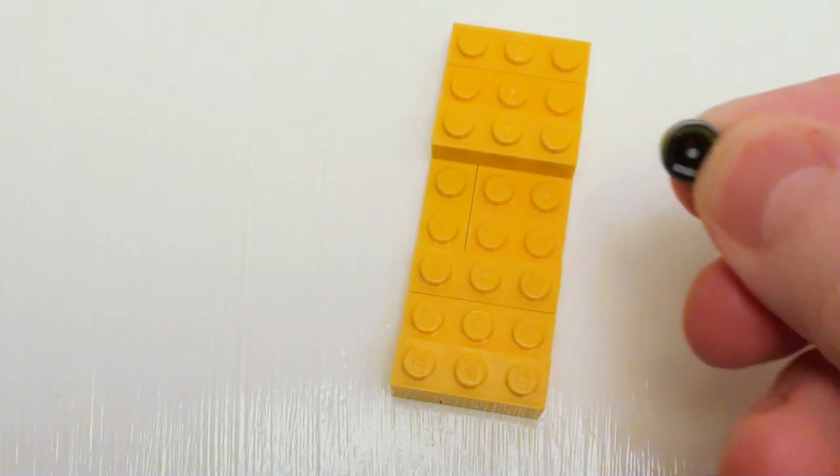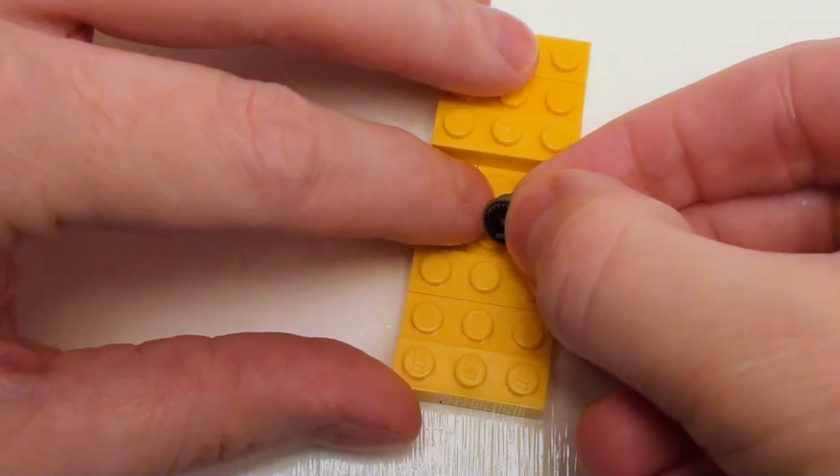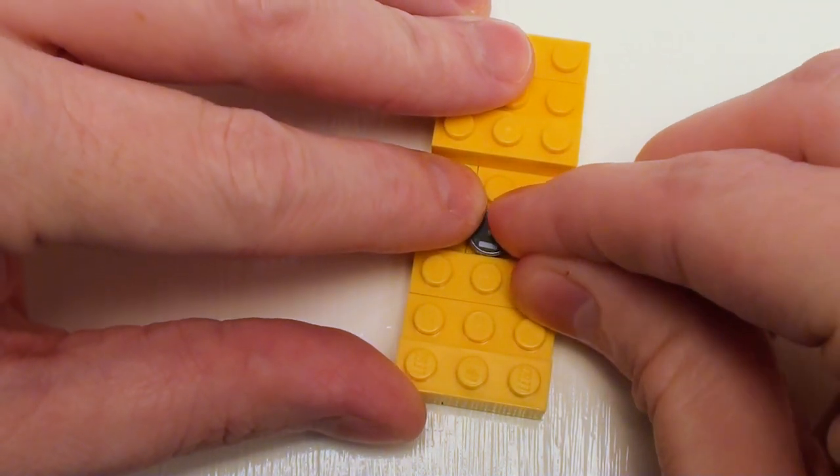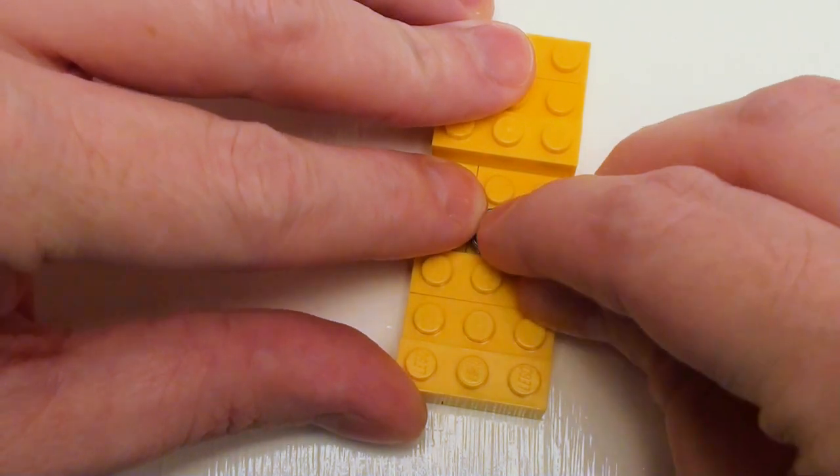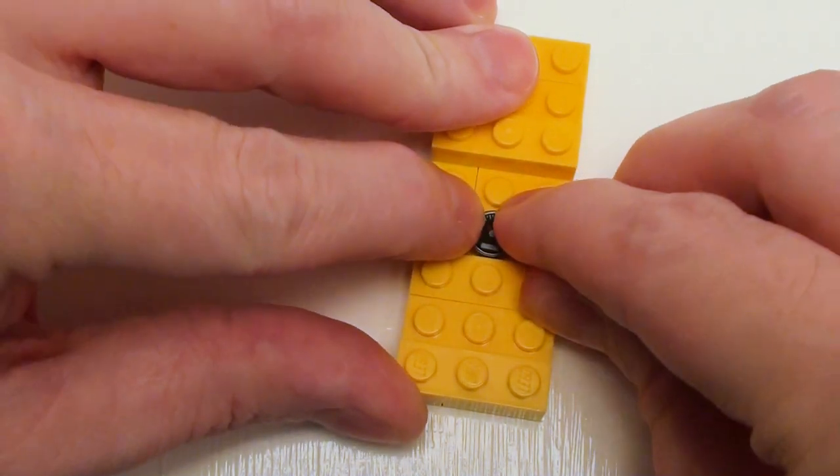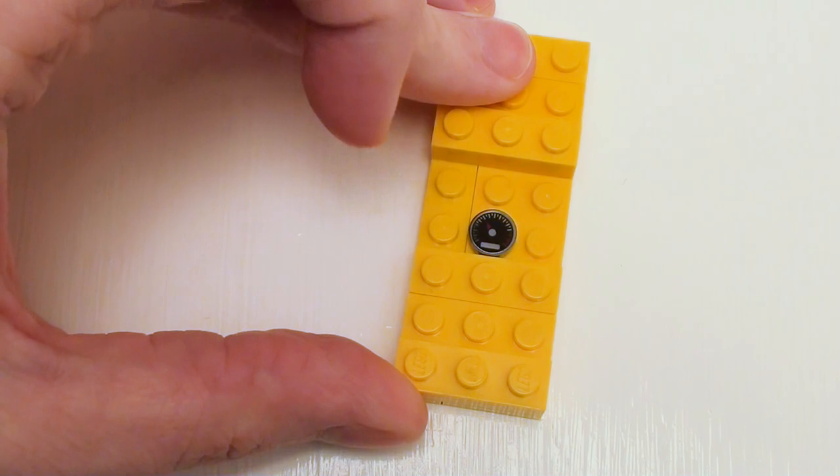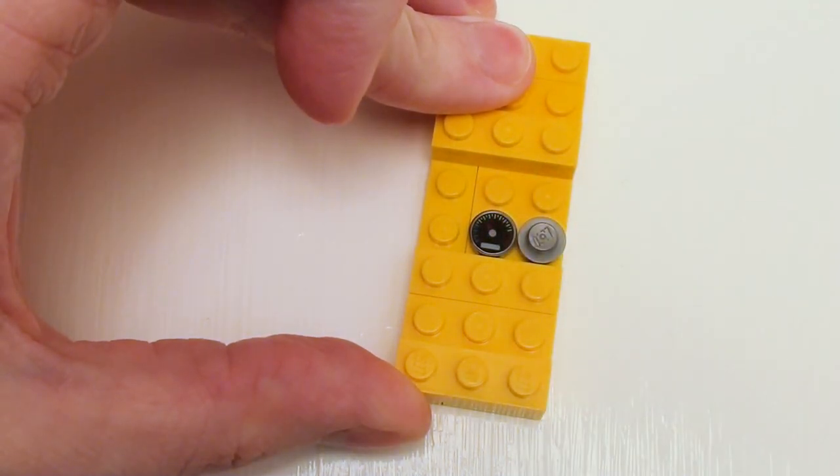Now let's add some control starting with a 1 by 1 round flat tile with a gauge print. Let's get this in there on the center. Make sure it's straight and place it right in the middle followed by two studs for knobs.